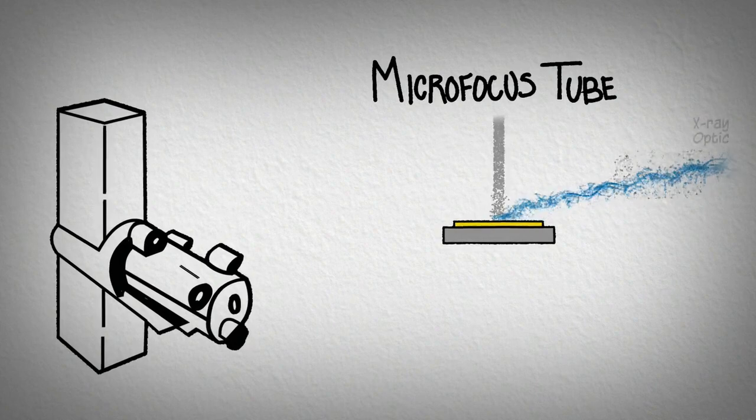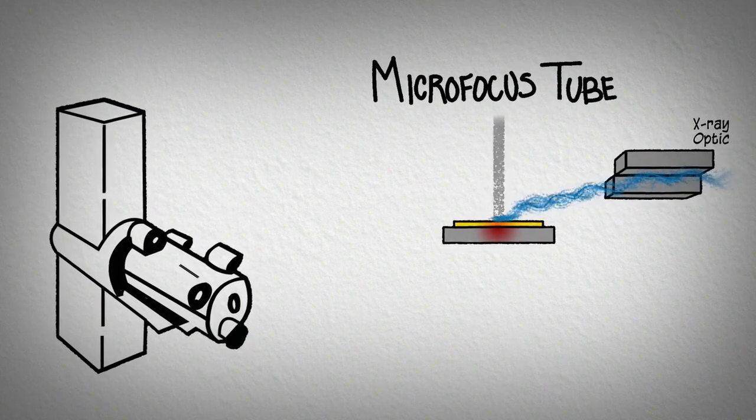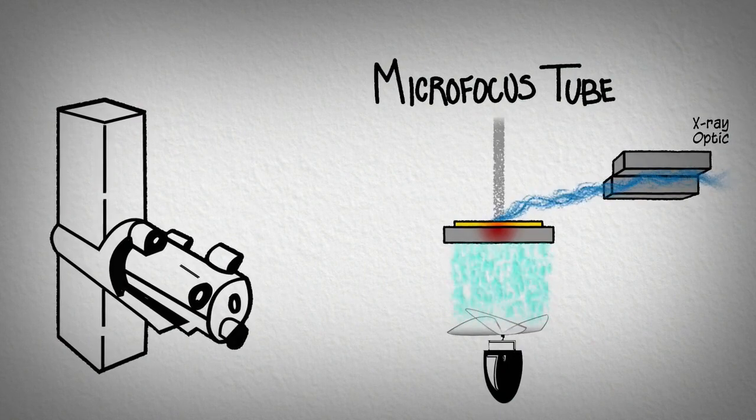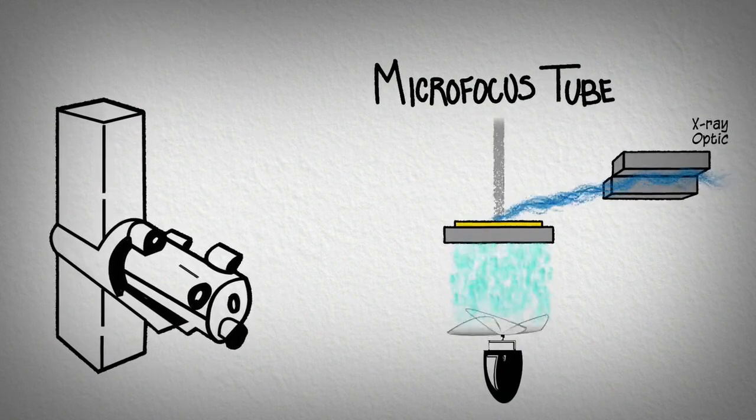By using a small, spot-shaped electron beam, heat can be dissipated in three dimensions. These micro-focus sources allow the anode to be air-cooled and produce a very bright spot beam.